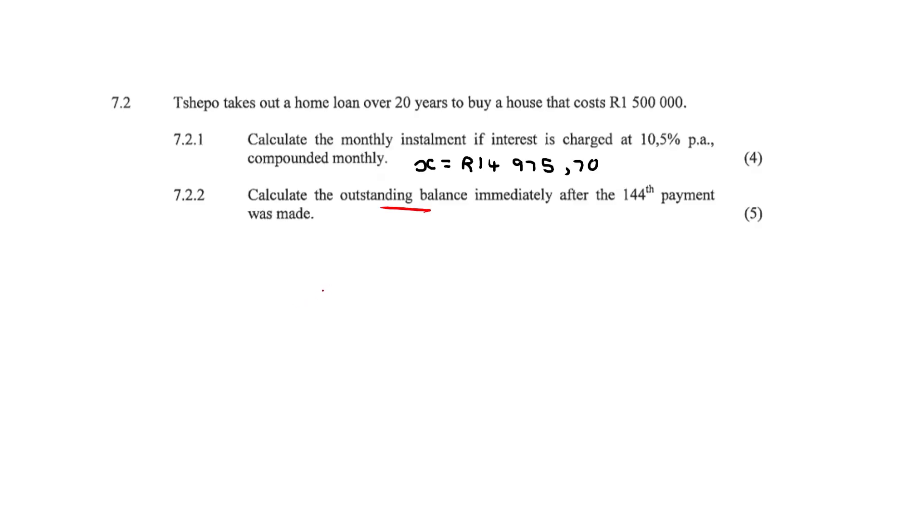So in order to calculate outstanding balance, we are still going to utilize our present value formula. Now I know your teachers, they like to use that A minus F calculation. I don't. It's just too big, it's too long, it's ugly. I would stay as far away from it as possible. I prefer using present value because it's just more efficient. So we use the present value formula here.